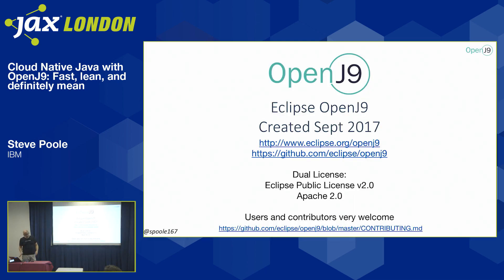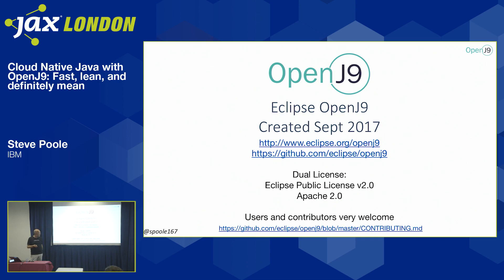We're going to talk about OpenJ9. IBM has for a long time had a VM called J9, and for various reasons it was contributed to Eclipse in September under the usual sorts of licenses - EPL or Apache, which is cool. We'll talk through why we did that and the benefits it can give you as a Java user switching over to OpenJ9.